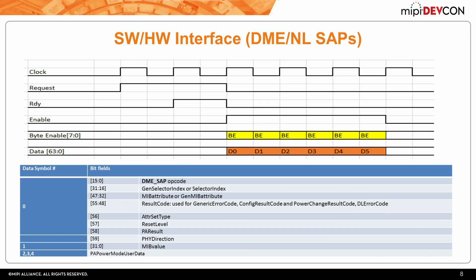In the case of the network layer, all fields are valid except when sending an odd number of bytes. For DME SAPs, the field decoding depends on the DME SAP opcode, which is the first symbol in the first 64-bit symbol.